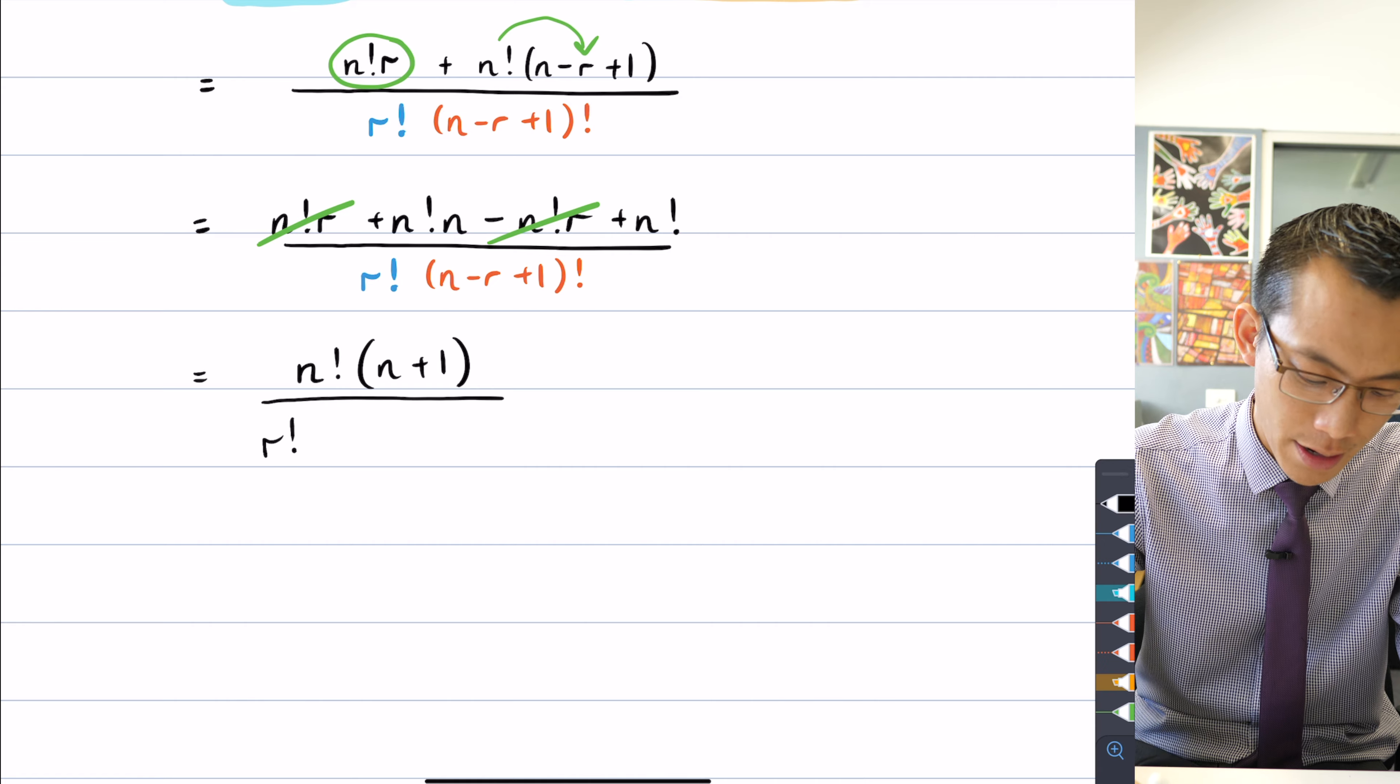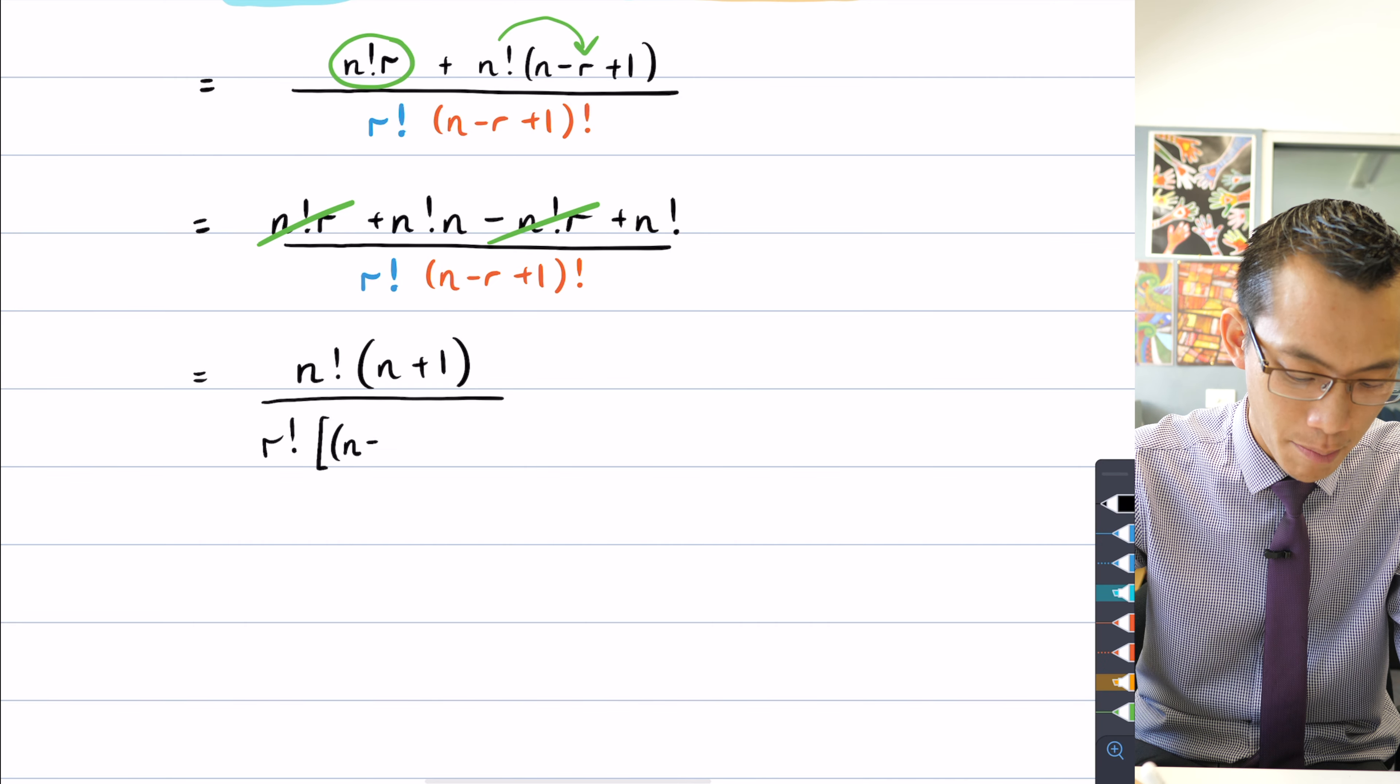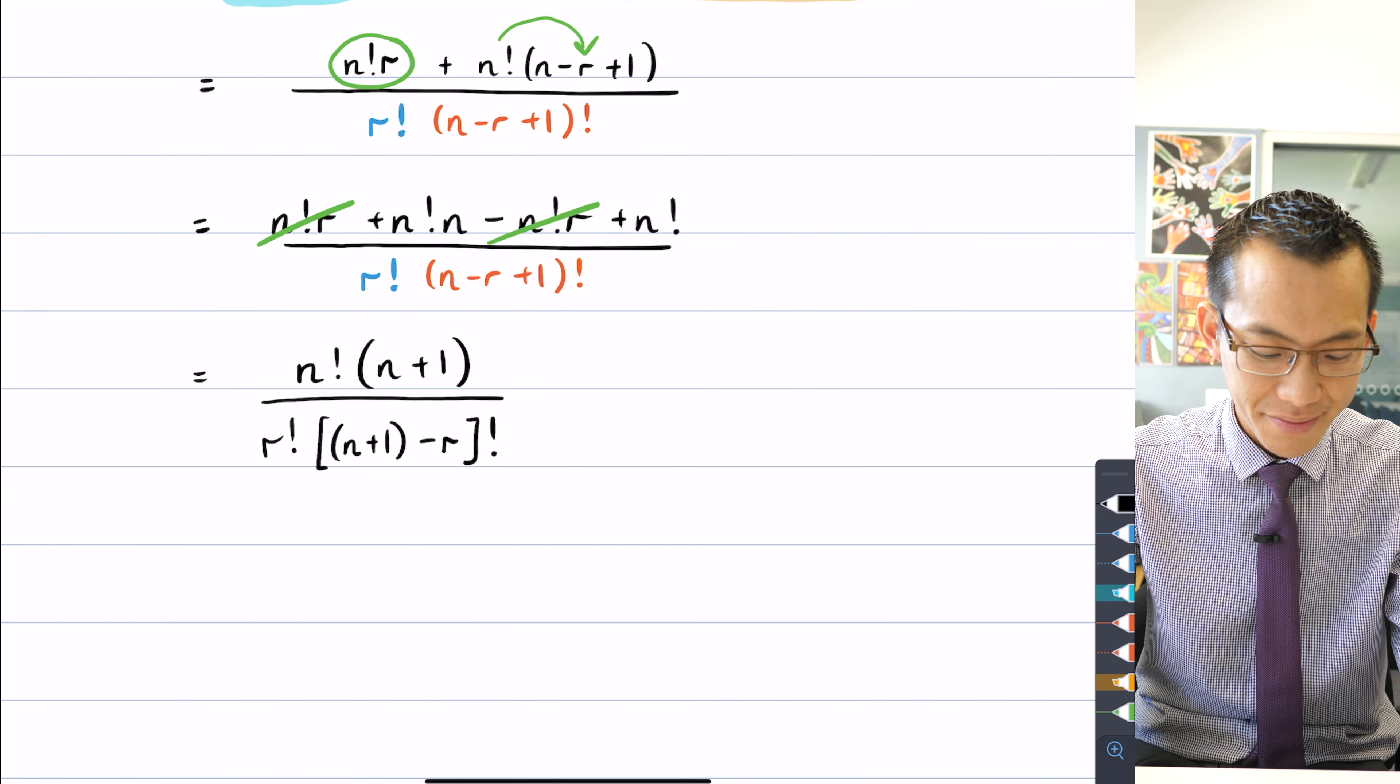I've got r factorial at the front and then I'm just going to rearrange this addition in here as n plus 1 in brackets take away r and that's factorial.